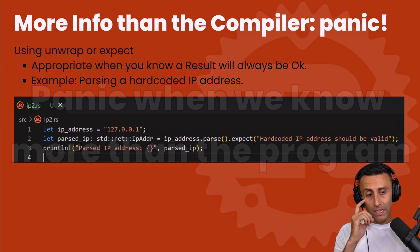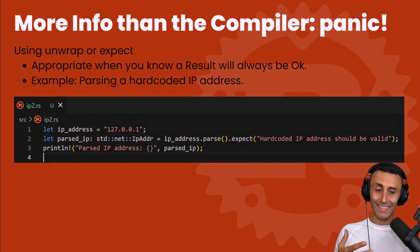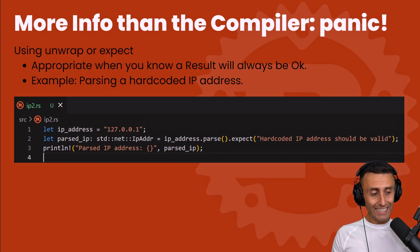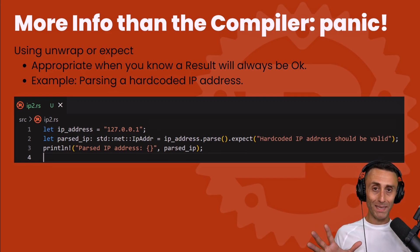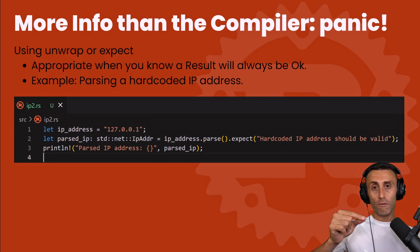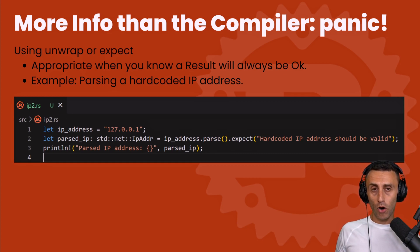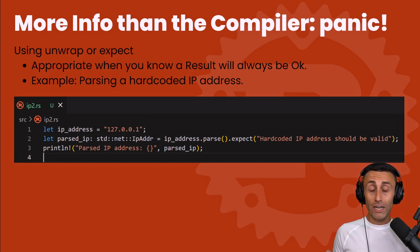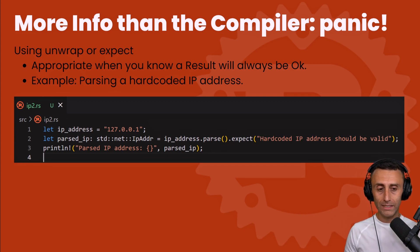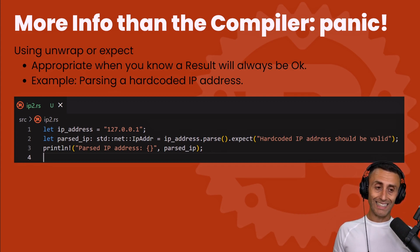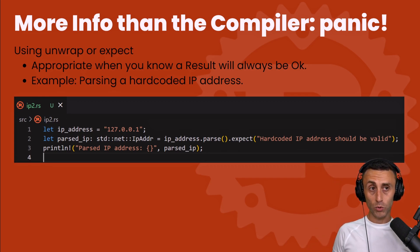Another case where we can use the panic macro is when we know something about the code that the compiler does not. Check line 1: we define a hard-coded IP address, and on line 2 we use it. If there is an error, we return a message using the expect method: "we should have the IP here because we just hard-coded it." Similarly, if we are reading from a configuration file that should always be present, and it is missing, we want the code to stop executing. Panic in Rust stops execution, clears the stack, and frees memory to avoid security issues.